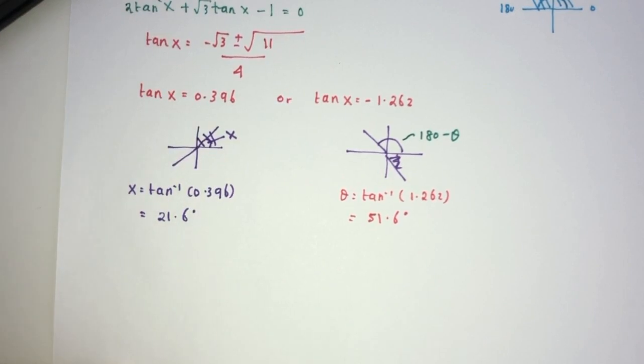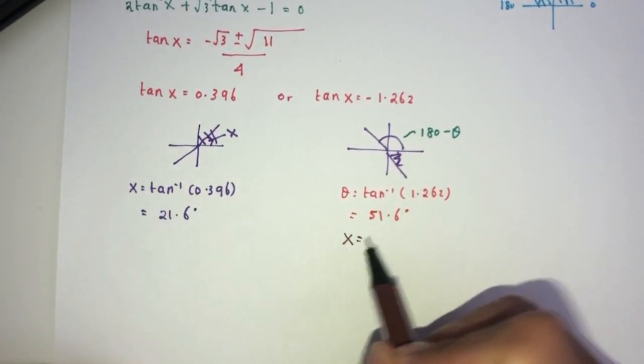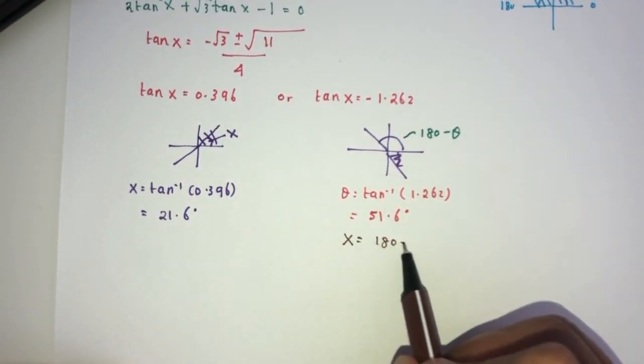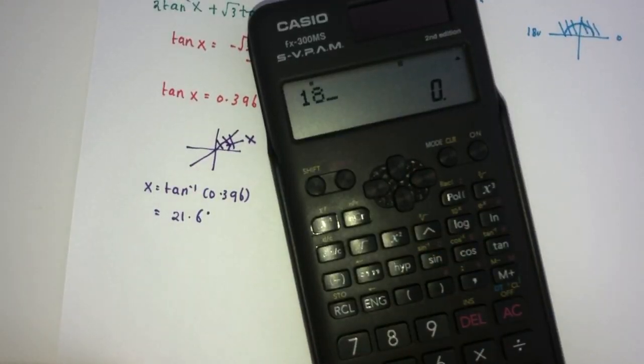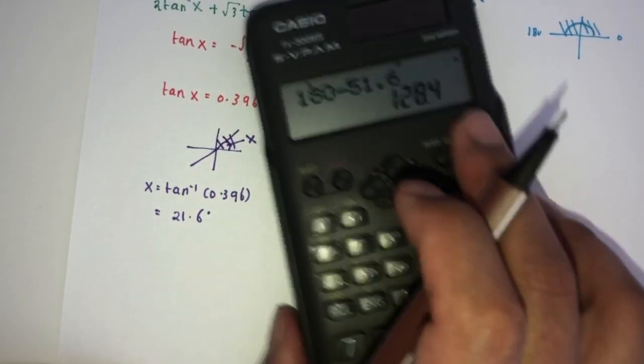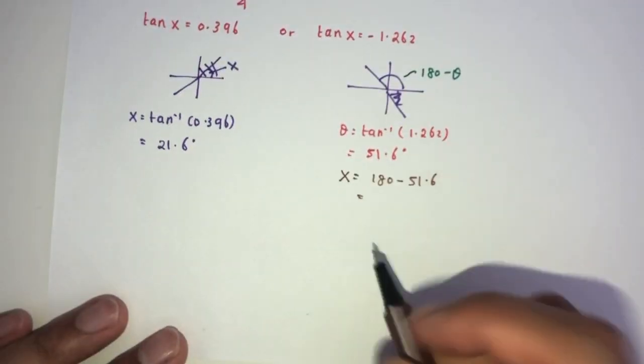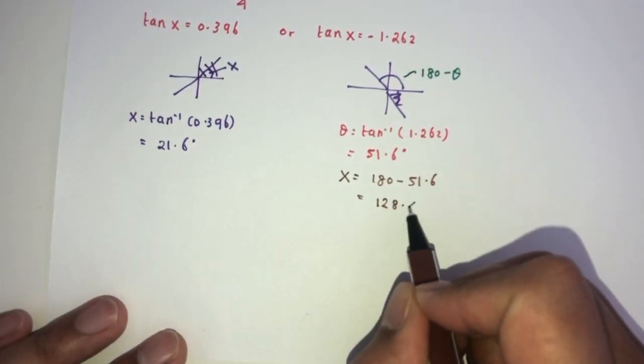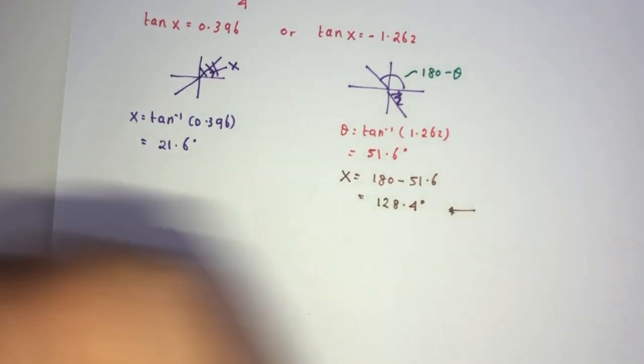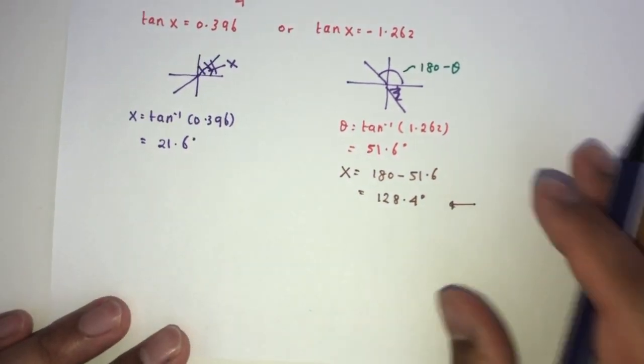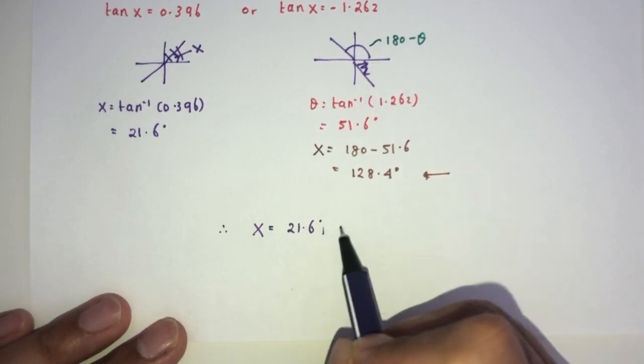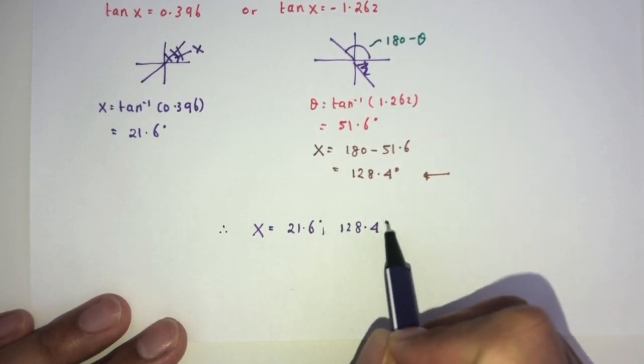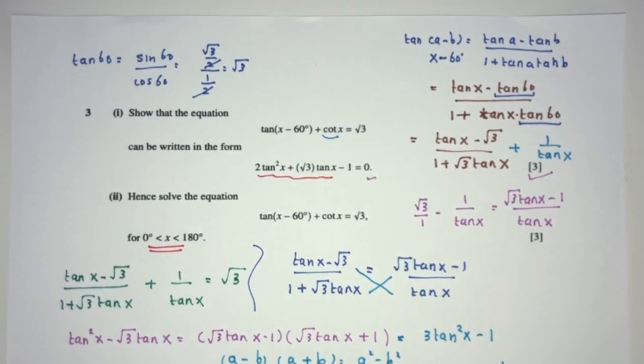So therefore finally for the value of x, we will use the quadrant which is 180 minus 51.6. That will be 128.4 for the angle, so 128.4 for the value of x. So eventually you will have two possible values of x for this equation. The first one is 21.6 and 128.4 degrees for the two between the value of 0 and 180. That is your question number 3.